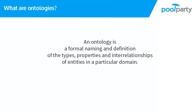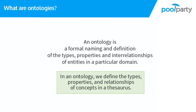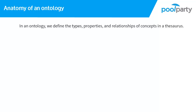Taking that definition and translating it to what it means in PoolParty, we could say that in an ontology we define the types, properties and relationships of concepts in a thesaurus. So there are three things we define in the ontology: types, properties and relationships. Let's take a look at each of those.